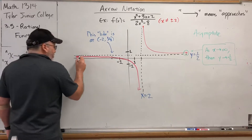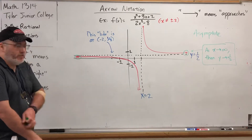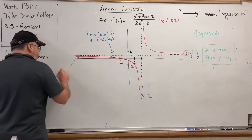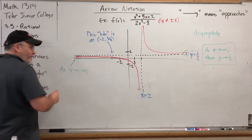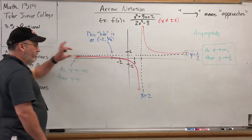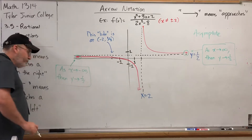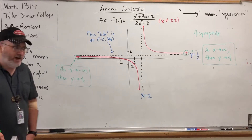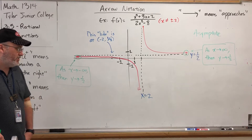How would we use similar notation to describe the left end behavior? It's below the horizontal asymptote at y equals 1/2, but it's still approaching it. For this arrow, we could say: as x approaches negative infinity, y is approaching 1/2. That's the role of a horizontal asymptote — to describe the end behavior of the graph, in the sense that the y values start settling down when the x's blow up, either positively or negatively.